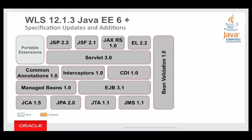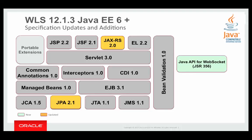At its core, WebLogic Server 12.1.3 is a Java EE6 based release, so it supports Servlet 3.0, JPA 2.0, EJB 3.1, CDI 1.0, and so forth. In this release we've provided targeted specification updates to bring in JAX-RS 2.0, a mechanism to update our JPA level to 2.1, and brand new API support with the Java API for WebSockets and the Java API for JSON Processing.